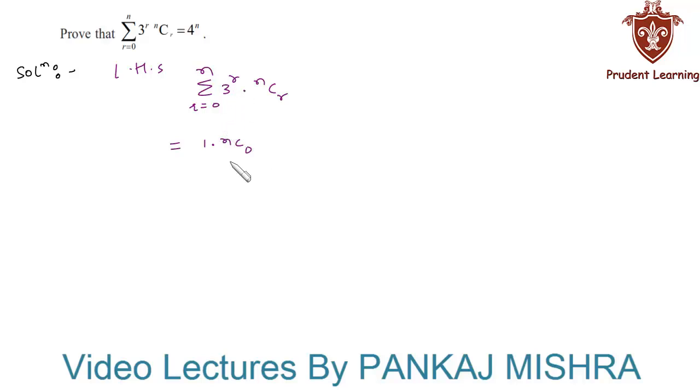Then you will get this term plus 3 to the power of 1 into NC1, this is for R equal to 1, plus 3² into NC2 for R equal to 2, and so on up to 3^N into NCN.